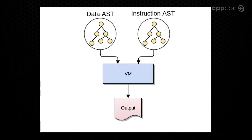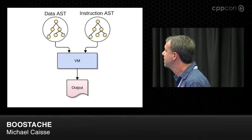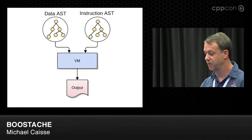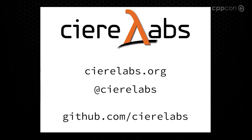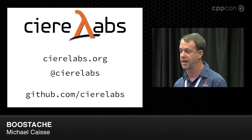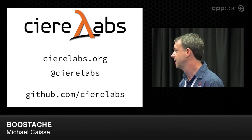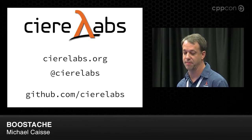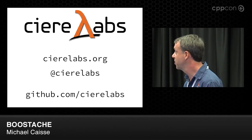So we now have the data AST and instruction AST going into the virtual machine engine, producing output. This is useful for a whole lot of different things. Our company, Kiera, is moving this forward, and we have something called Kiera Labs — our open source work from things we've done internally for clients or ourselves. You can find more information at keralabs.org, including lots of tutorials about Spirit and the modern C++ techniques we're using. At github.com/KieraLabs you'll find the source code for Boostdash.